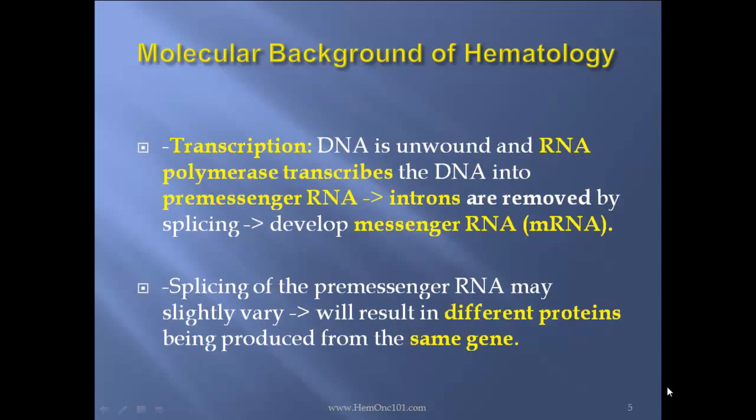Transcription: DNA is unwound, and RNA polymerase transcribes the DNA into pre-messenger RNA. The introns are removed by splicing, then you develop messenger RNA, mRNA. Splicing of the pre-messenger RNA may vary slightly, which will result in different proteins being produced from the same gene.